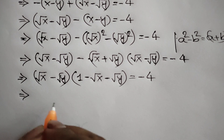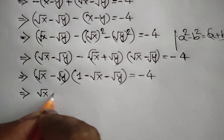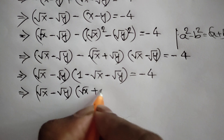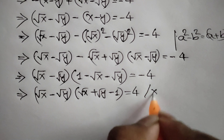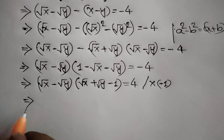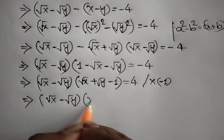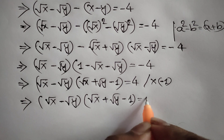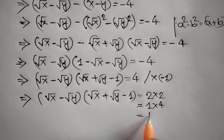Multiplying both sides by negative 1, we get square root of x minus square root of y times square root of x plus square root of y minus 1 is equal to 4. This 4 can be written as 2 times 2, or 1 times 4, or 4 times 1.